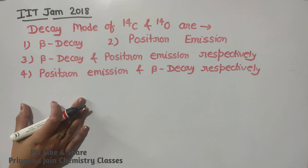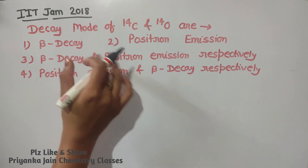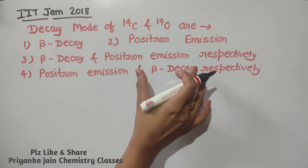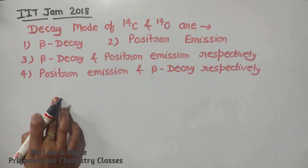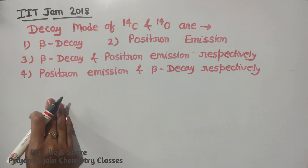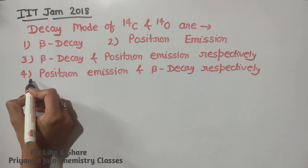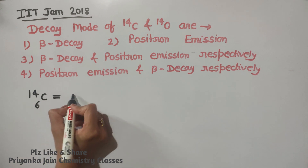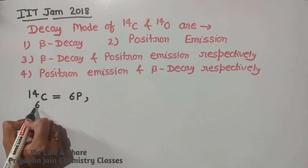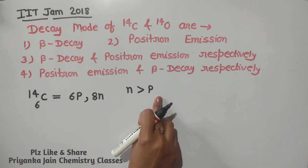This question is from IIT JAM 2018: find the decay mode of carbon-14 and oxygen-14. The four options include beta decay and positron emission in various orders. I have already explained beta decay and positron emission in part one of the nuclear chemistry series. For carbon-14, the atomic number is 6, so there are 6 protons and 14 minus 6 equals 8 neutrons. Since the number of neutrons is greater than protons, one neutron needs to be converted to a proton.